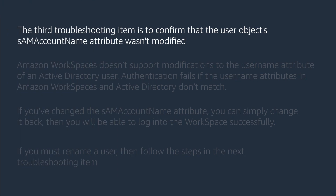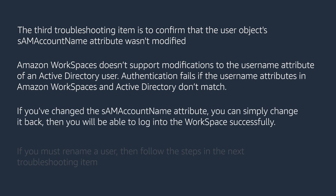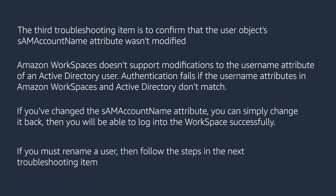A third troubleshooting item is to confirm that the user object's SAM account name attribute wasn't modified. Amazon Workspaces doesn't support modifications to the username attribute of an Active Directory user. Authentication fails if the username attributes in Amazon Workspaces and Active Directory don't match. If you've changed the SAM account name attribute, you can simply change it back, and then you will be able to log into the workspace successfully. If you must rename a user, follow the steps in the next troubleshooting item.